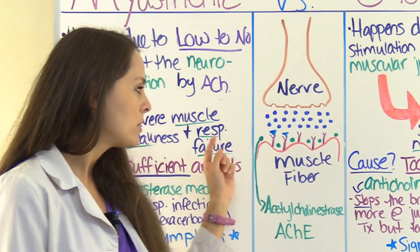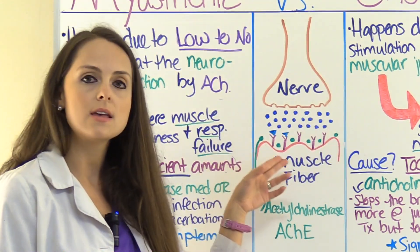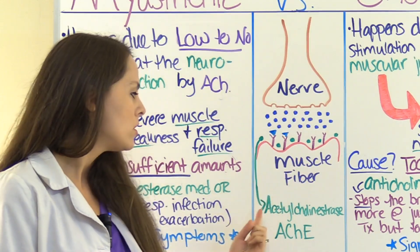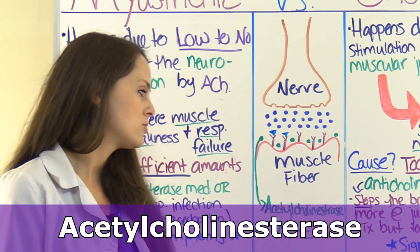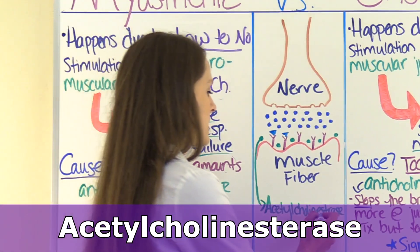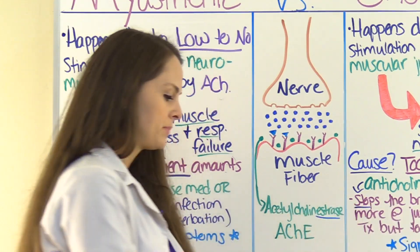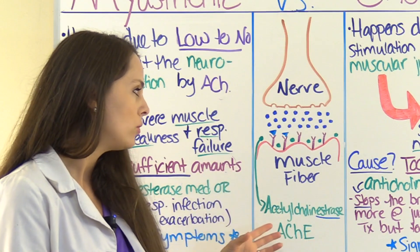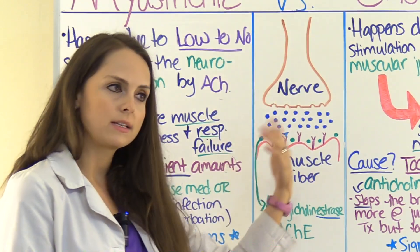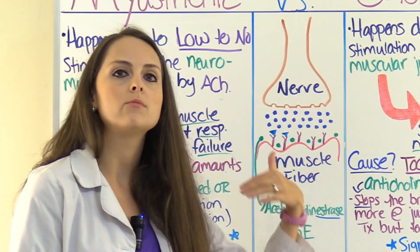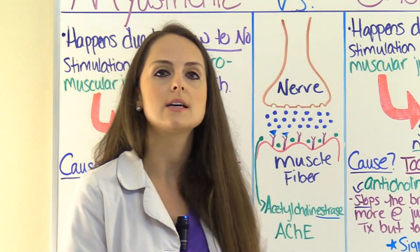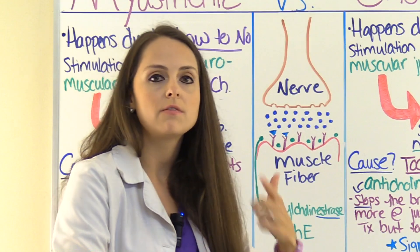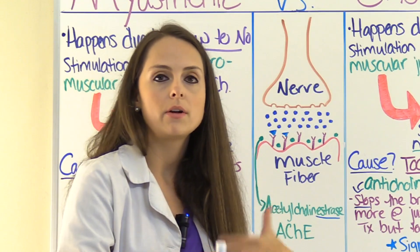Another thing to point out: hanging out in this neuromuscular junction is acetylcholinesterase. Esterase is an enzyme that breaks down acetylcholine, which helps with the recycling process of acetylcholine so that stimulation of the muscle fiber can keep going on and on.